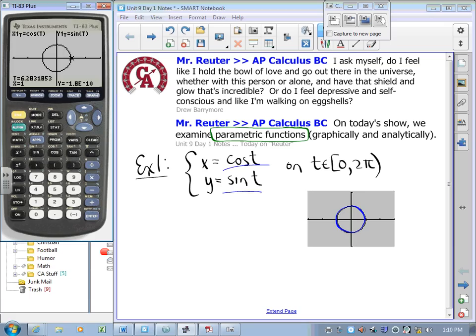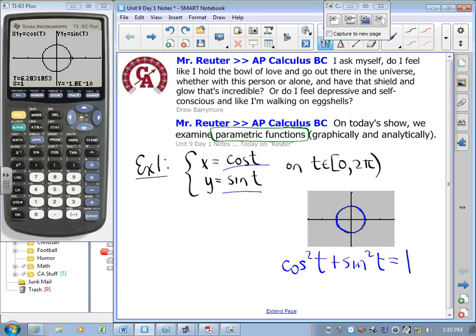Of course, you knew that it was a circle because you know that for all values of t, cosine squared t plus sine squared t is 1, and cosine squared t, that's just x squared. Sine squared t, that's just y squared. I've got a circle centered at the origin, radius 1.